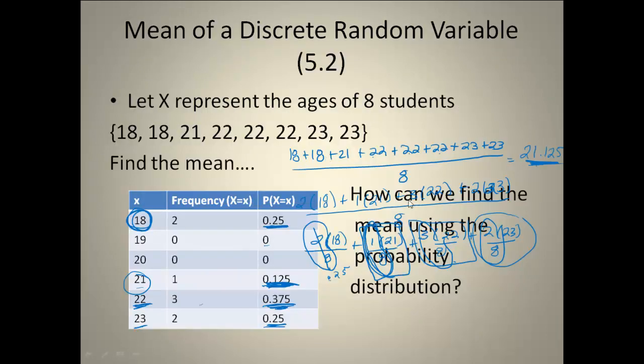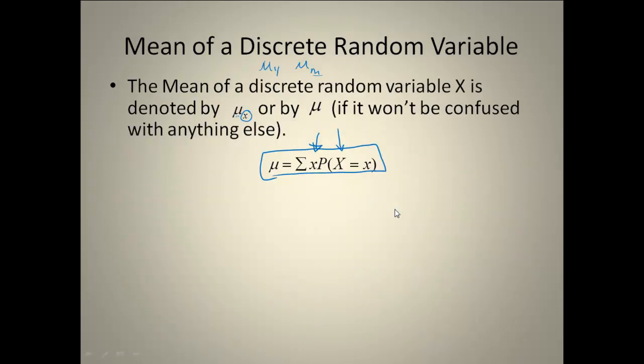That's what I was trying to show you from this last example. I could take my X value, my 18, multiply it by its probability and get this first piece. I could take my X value, my 21, multiply it by its probability and get my second piece. Then all I need to do is add all those up. So it's really finding the mean the exact same way that we learned back in Chapter 3. But it's just a way to find it from our table.